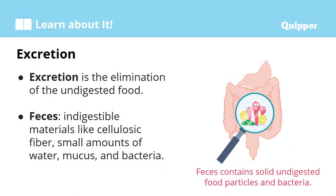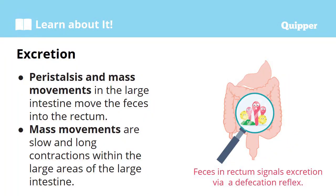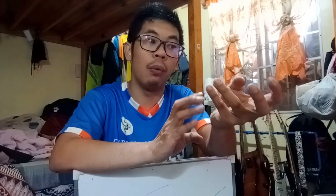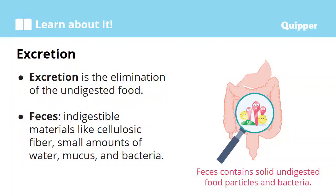When you talk about excretion, simply the keyword there is elimination — elimination of undigested food. Not everything can be digested by our digestive system, either because what remains has no more nutritional value or our body can no longer digest it. So there is what you call undigested food, or simply what you call feces — also called stool. The material that goes out from your body is your feces or stool, and the process involved is excretion.